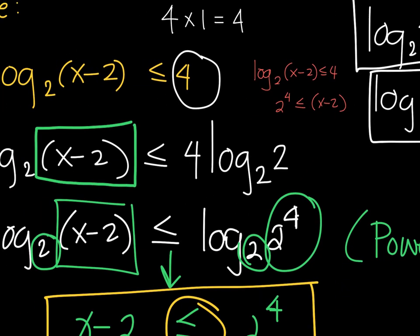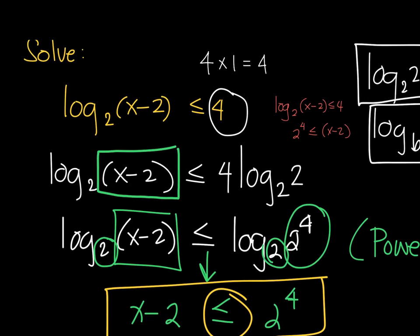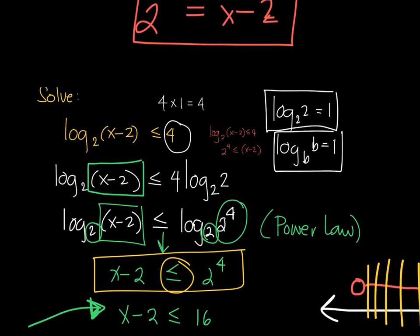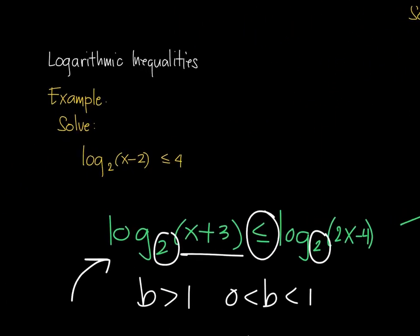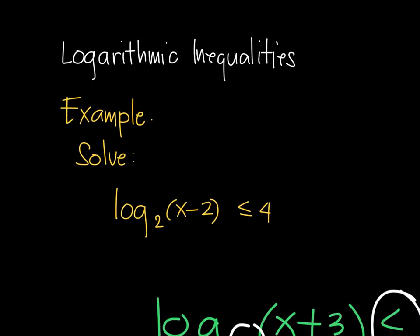The suggested approach is to express the logarithmic inequality so that you have one log on each side and then proceed using the usual method. I hope you understand how to solve logarithmic inequalities when you have one log on one side and a number on the other side. Thank you.